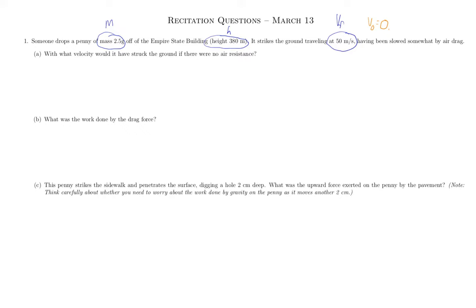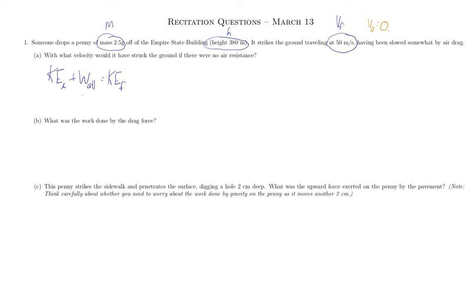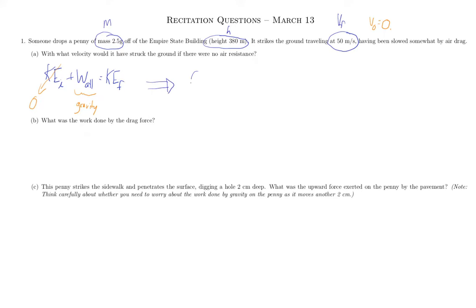So we can use the work energy theorem to figure out how fast it's going when it hits the ground. The work energy theorem just says that the work done on something is the change in its kinetic energy, and the kinetic energy depends only on something's speed. So if we're looking for its speed when it hits the ground, then finding its final kinetic energy gives us what we want. So the work energy theorem says that the initial kinetic energy plus the work done by all forces equals the final kinetic energy. But in this case, the only force doing work on the penny is gravity. There's no air drag for part one. We know that the formula for kinetic energy is 1 half mv squared. And since the penny is not moving at the beginning, I know the initial kinetic energy is zero.